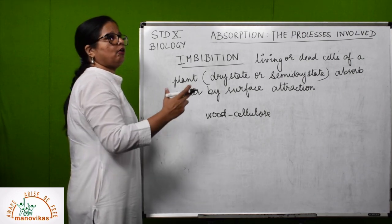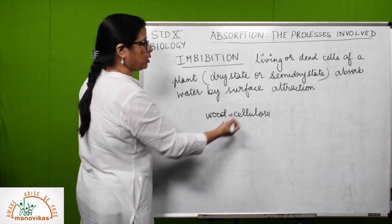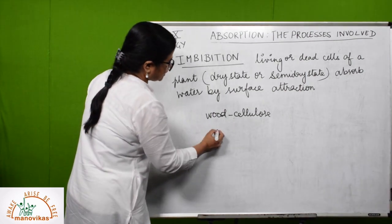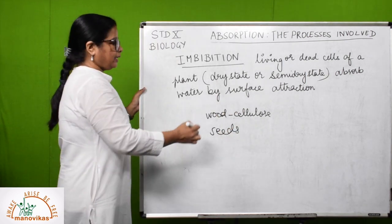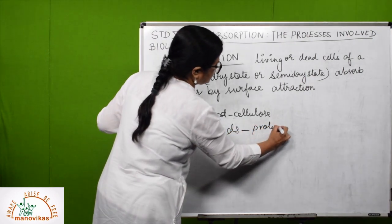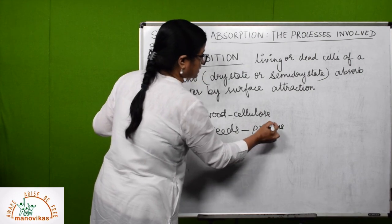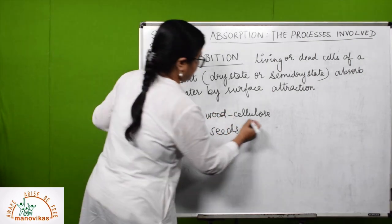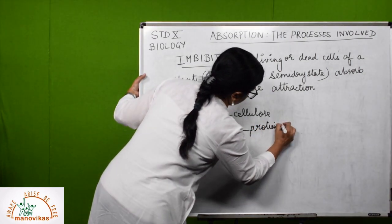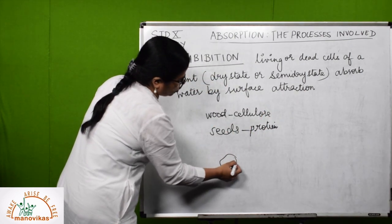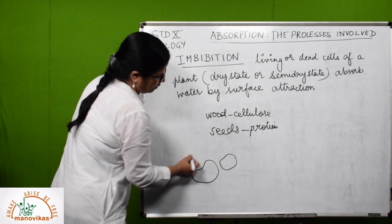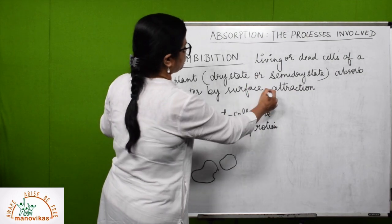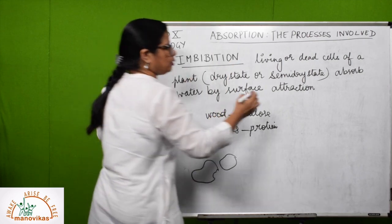This cellulose has an affinity — or love — for water, which can be a key exam question. Similarly, seeds kept in water: seeds contain proteins, and this protein also has an affinity for water. So when you soak a seed it will first become fully swollen up, and after a while the seed coat will rupture. This happens because seeds have an affinity for water — they attract water — hence imbibition occurs.